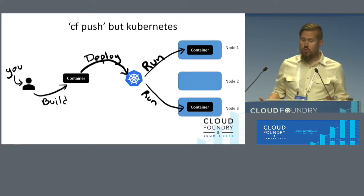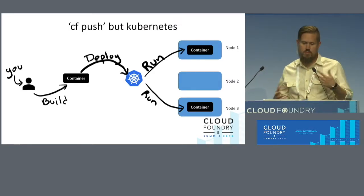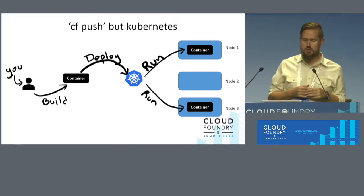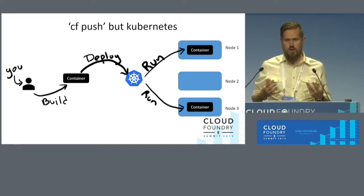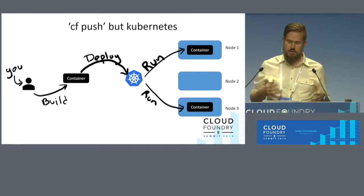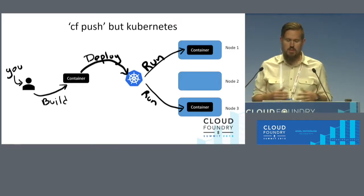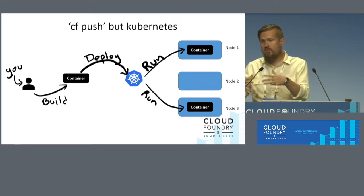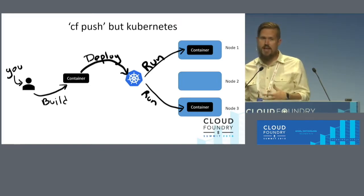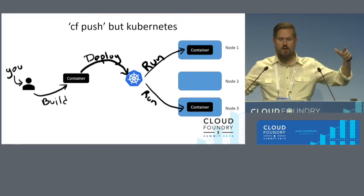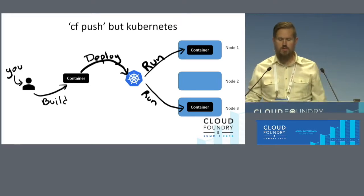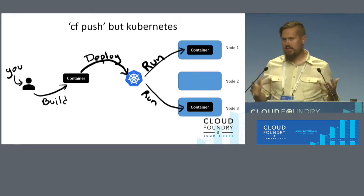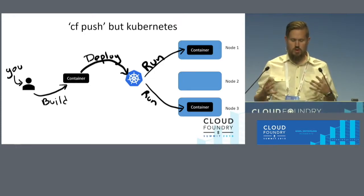When you're going to deploy something to Kubernetes — if you're going to abstract away what that CF push experience looks like — you build a container, write some YAML or JSON that goes along with that, and then post to the API and say deploy this thing. It's responsible for making that happen: run this container, I want two replicas, it's going to go on these two nodes.